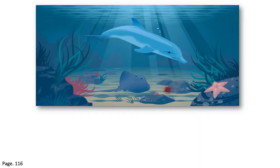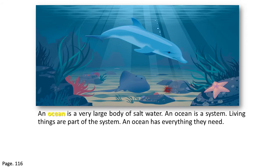Let's open page 116 in our science book, where we can see an ocean scene with different kinds of animals and plants. Do you still remember what an ocean is? An ocean is a very large body of salt water. An ocean is a system, and living things are part of the system. An ocean has everything they need.